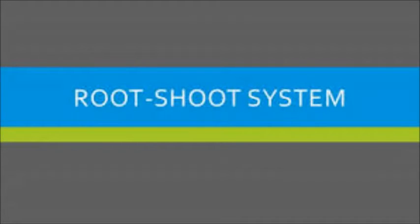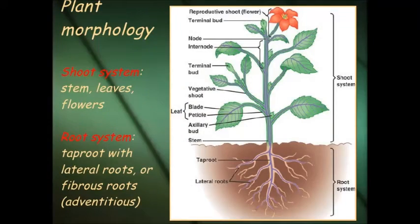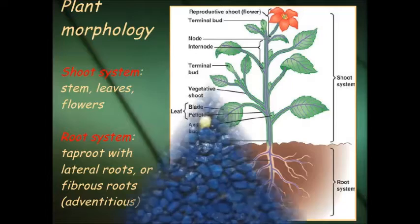Welcome to another interesting class where we will be learning about the root and shoot system. Have you ever wondered how a growing plant develops? A growing plant has different parts and functions and can be divided into the root system that usually grows below the ground, and the shoot system which are parts of the plant that can grow above the ground. Take a look at this video illustration.